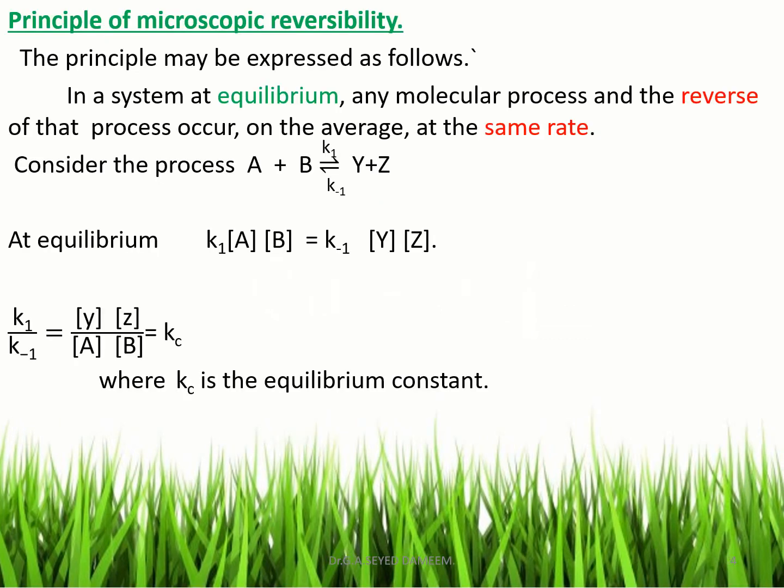The Principle of Microscopic Reversibility applies to reversible reactions, which consist of two opposing processes: one is the forward reaction and another is the backward reaction. According to this principle, in a system at equilibrium, any molecular process and the reverse of that process occur on average at the same rate.